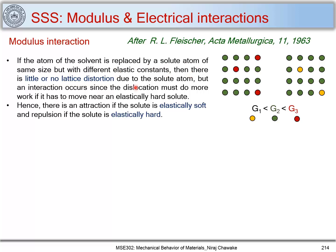In modulus interaction, the solvent atom is replaced by a solute atom of the same size but with different elastic constants, resulting in little or no lattice distortion. However, interaction occurs because the dislocation must do more work to move near an elastically hard solute. Dislocations are repelled by solute atoms with higher shear modulus and attracted toward those that are elastically soft. This is the Flischer interaction, which contributes to solid solution strengthening.